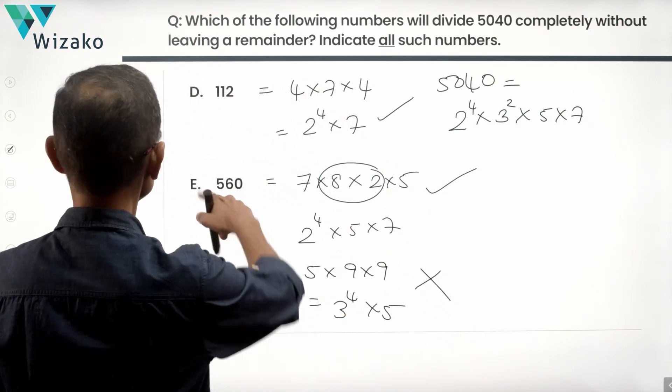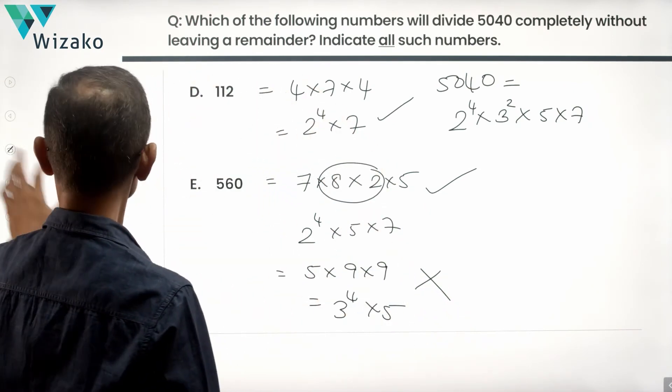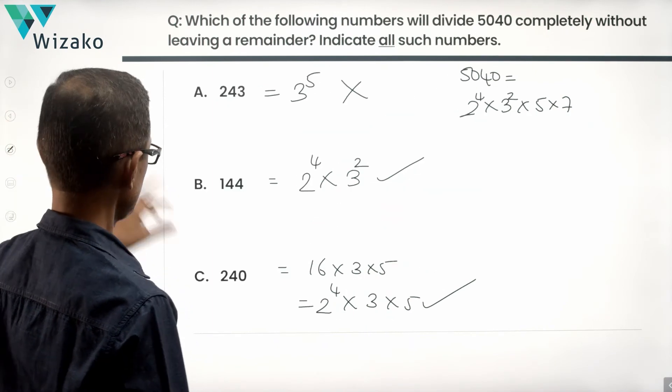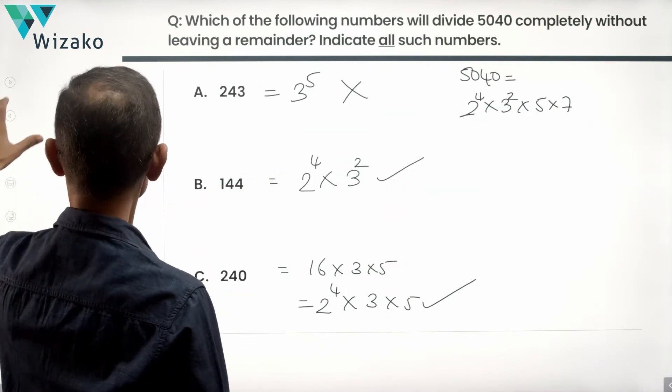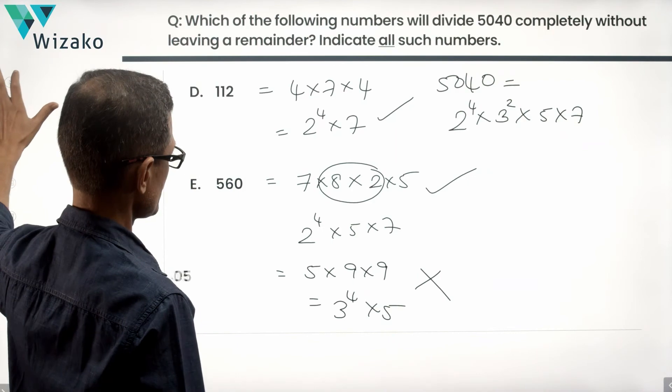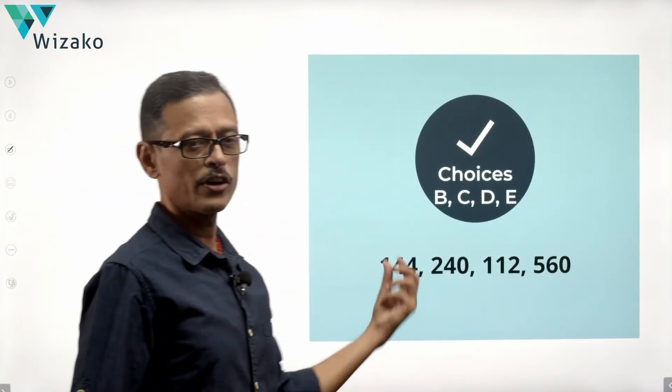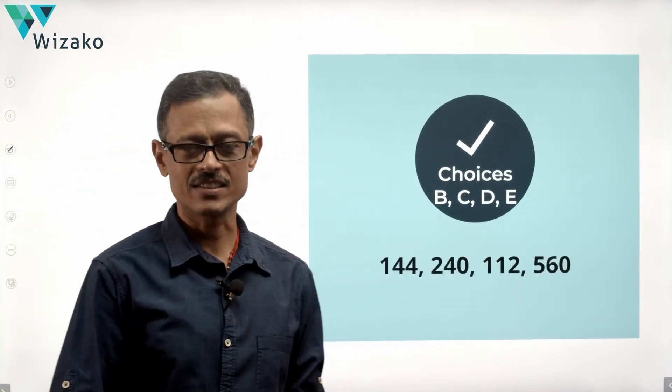So what are all the answer options? E, D and then we had a couple of them there. In addition to that, we have C, B. B, C, D, E are our correct answers, which essentially translate to 144, 240, 112 and 560.